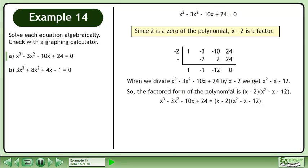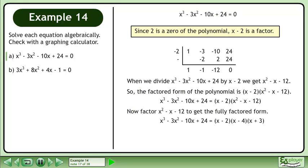So the factored form of the polynomial is x minus 2 times x squared minus x minus 12. Now factor x squared minus x minus 12 to get the fully factored form: x minus 2 times x minus 4 times x plus 3.